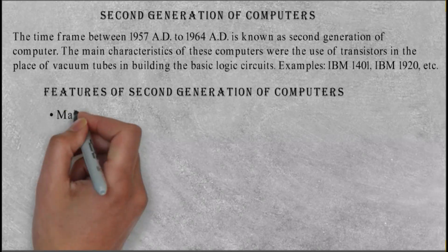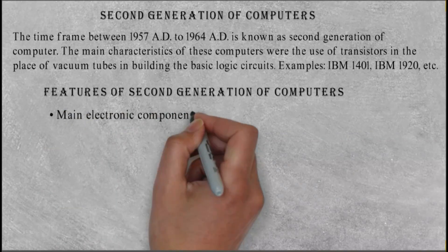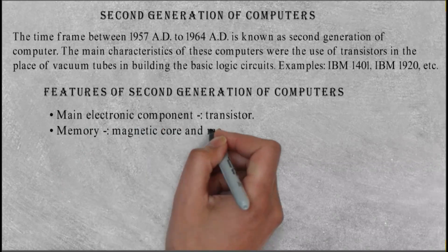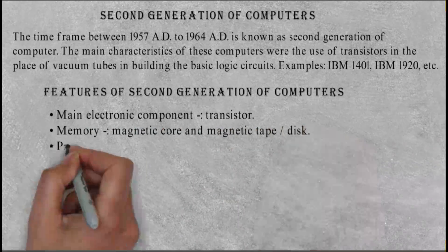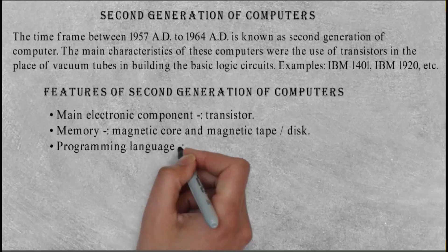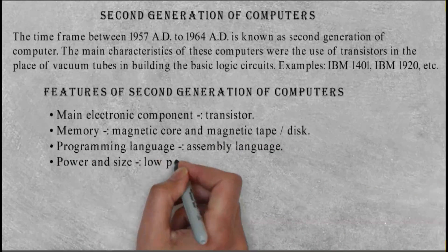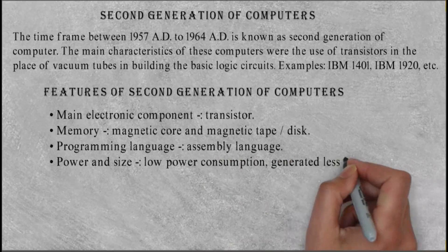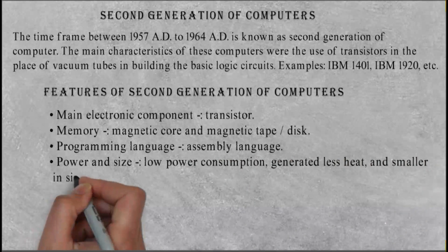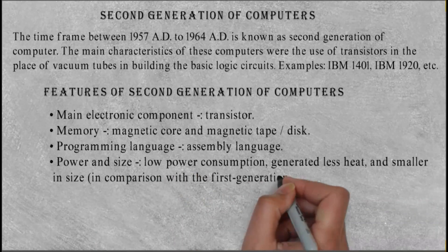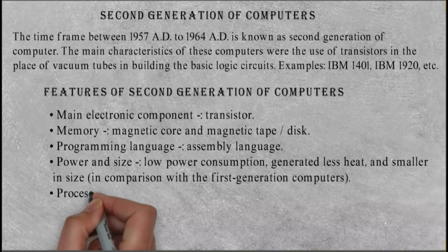Features of second generation of computers: Main electronic component: transistor. Memory: magnetic core and magnetic tape/disk. Programming language: assembly language. Power and size: low power consumption, generated less heat, and smaller in size in comparison with the first generation computers. Processing speed: microseconds.